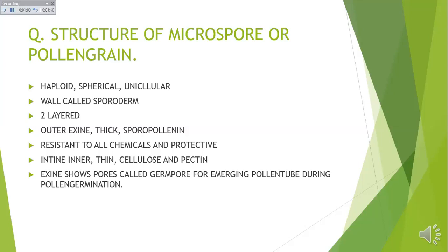The wall of the pollen grain is called sporoderm, and it shows two layers. The outer layer is called exine, which is thick and made up of sporopollenin. It is resistant to most chemicals and hence it is well protected.